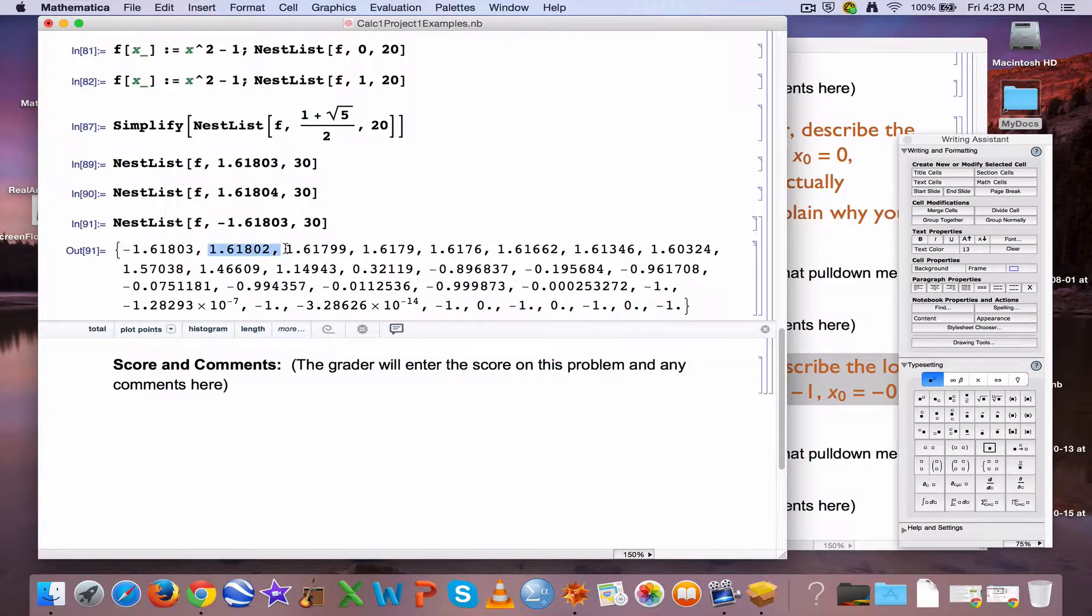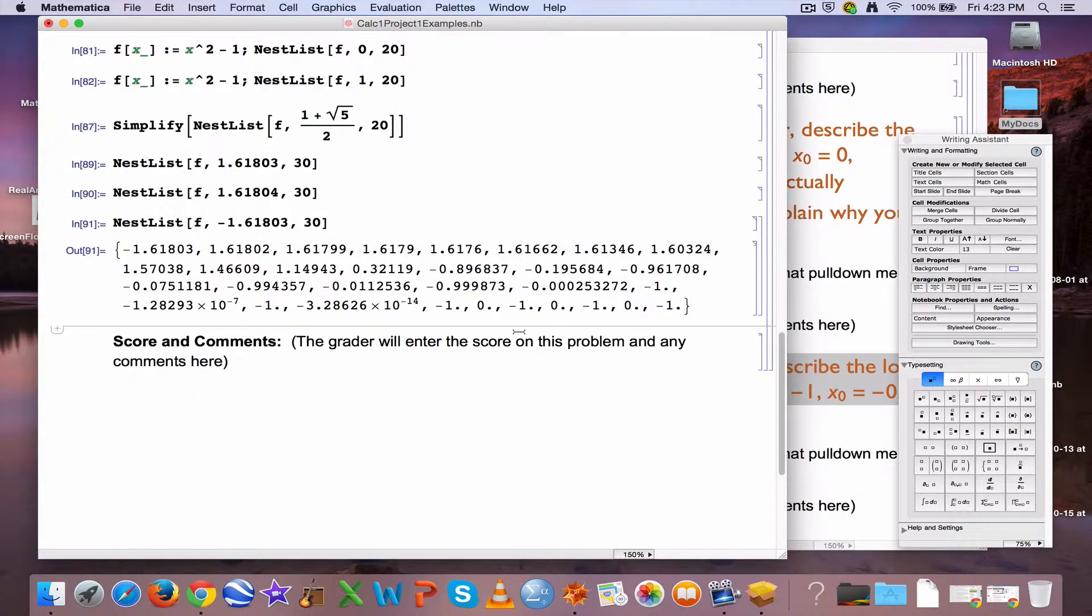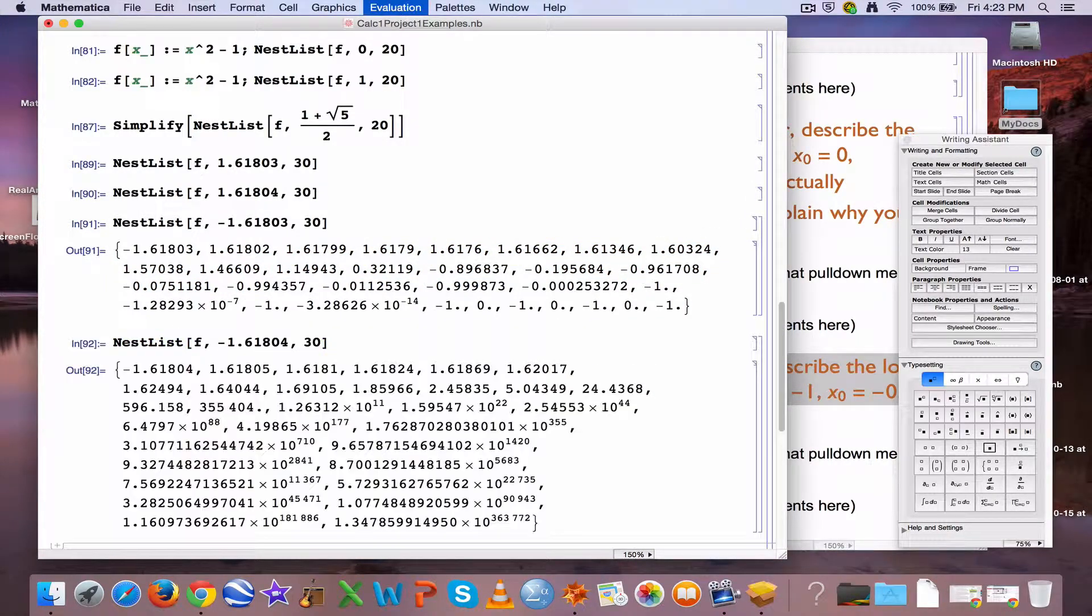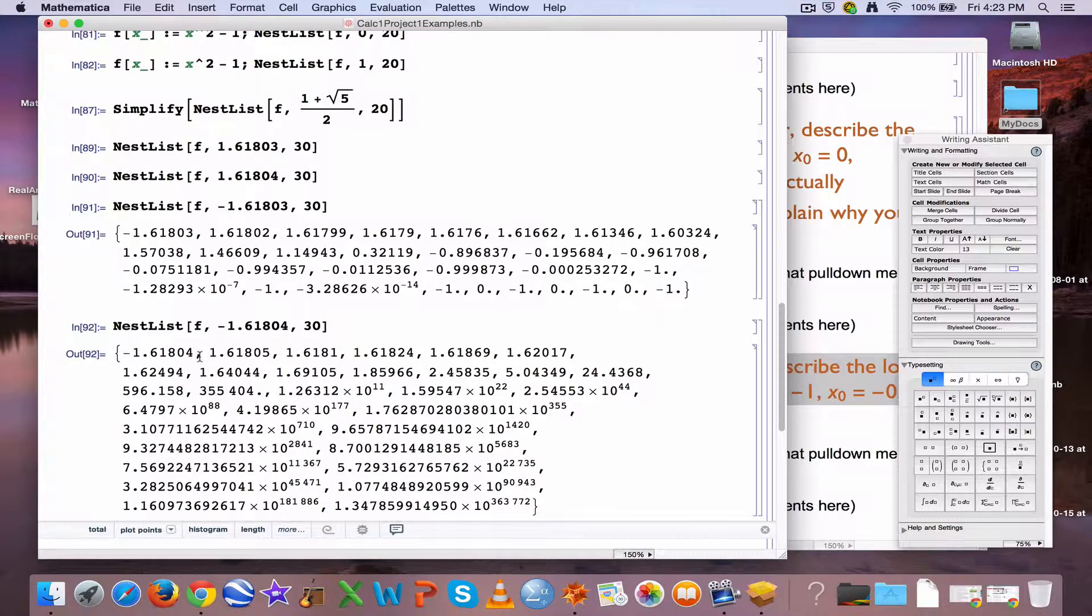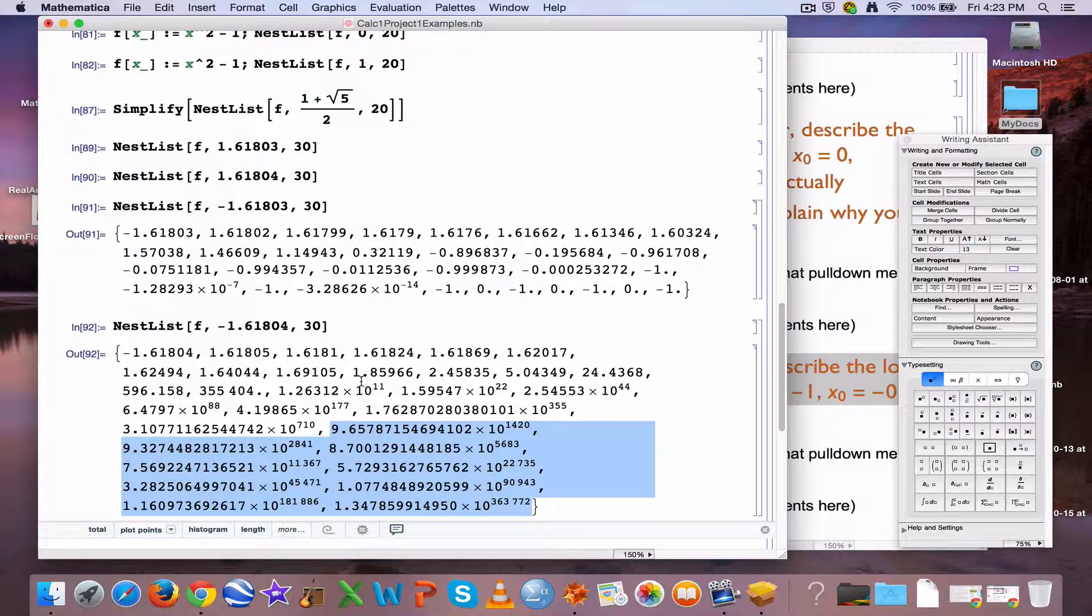Once again, we're bouncing back and forth between negative 1 and 0 approximately, at least in the long run. And notice with this one, it becomes positive right away and stays positive until you get close to bouncing back and forth between 0 and negative 1. So copy and paste this one, make it a negative,